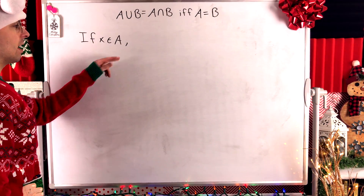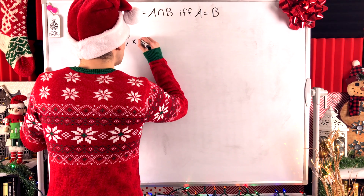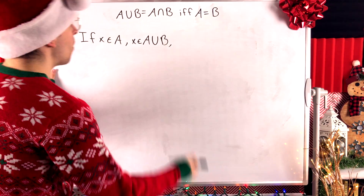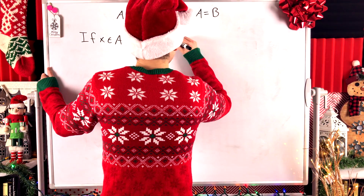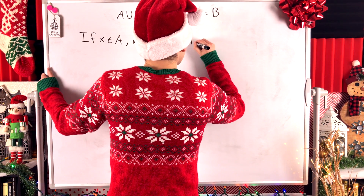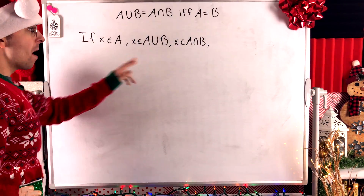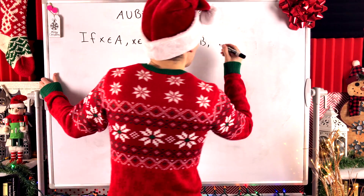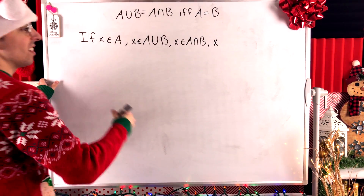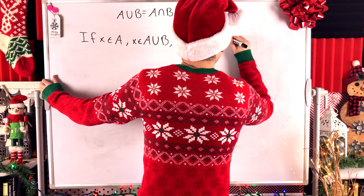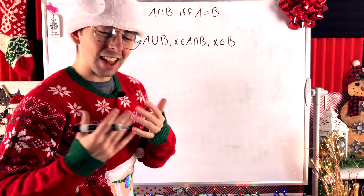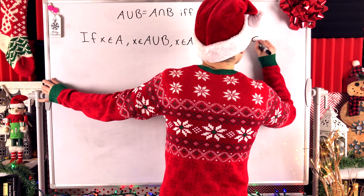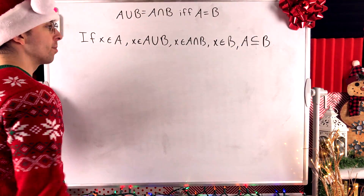What do we know about X if it is in A? Well, by definition of set union, X is also an element of A union B. However, since we know A union B is equal to A intersect B, that would mean that X is also an element of A intersect B. But that means, by definition of set intersection, that X is an element of A and X is an element of B. Since we assumed that X was in A, the important part is that X is an element of B. Thus, if X is an element of A, it must also be an element of B, and so we've proven our desired subset relation that A is a subset of B.